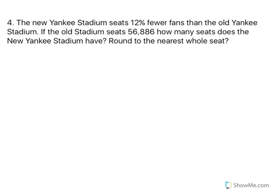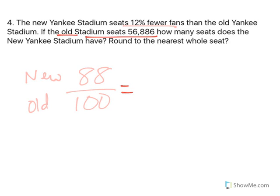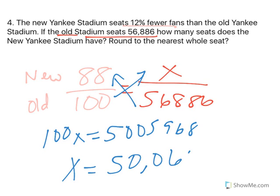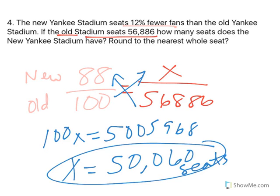Number four — my favorite problem. The new Yankee Stadium seats 12% fewer. That's 100 minus 12, which is 88. So this is the new stadium, this is the old stadium — both were awesome, by the way, I've been to both. If the old stadium seats 56,886, how many seats does the new one hold? We cross multiply and get 100X equals 5,005,968. Divide by 100 and I round to the nearest whole number: 50,060 seats, because you can't have a partial seat.